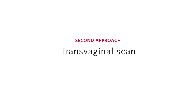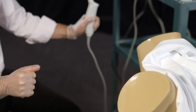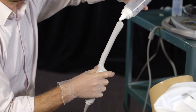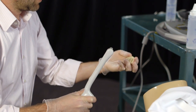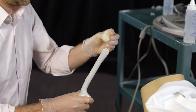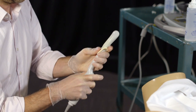If a transabdominal scan is not definitive, switch to the transvaginal approach. For the transvaginal scan, your patient needs an empty bladder. Have the bed set up for a pelvic exam with the patient's buttocks at the edge of the mattress. Prepare the transvaginal probe by first applying ultrasound gel and then the sterile probe cover, and also apply some lubricant gel on the probe cover.